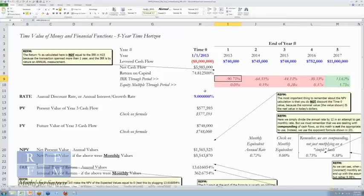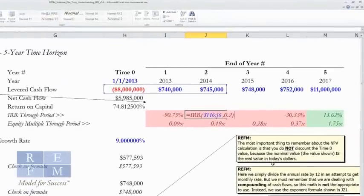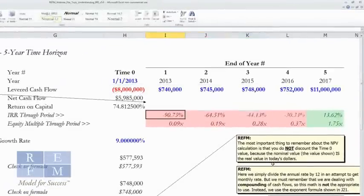And so one thing that we can do when we look at a series of cash flows is don't just calculate the IRR for the entire cash flow stream, but create a line in your models and look at the IRR as of the end of each period.